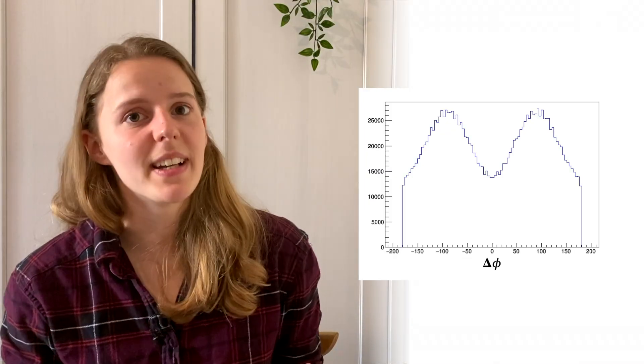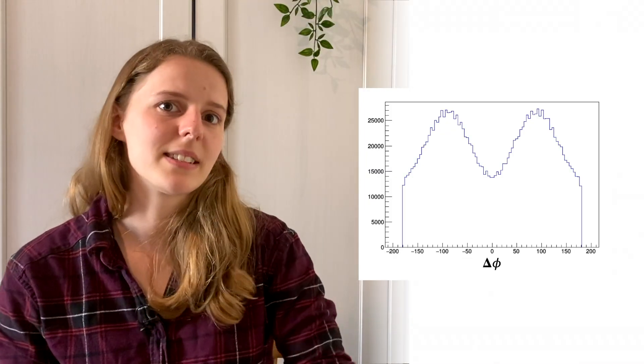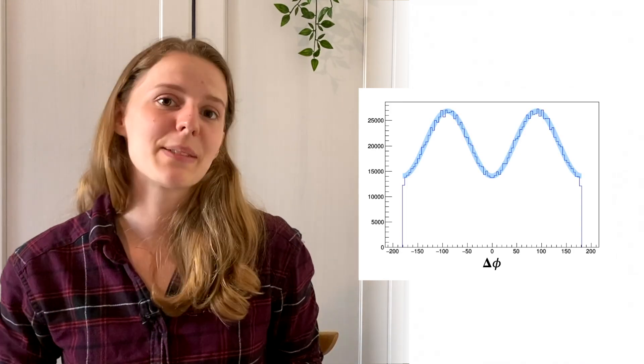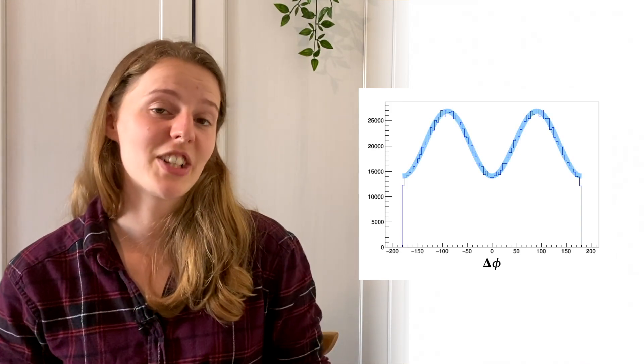So, how could this help in medical imaging? First thing to do is find delta phi, the difference between the angles for all the photon pairs we detect. And as expected, this has a nice cosine shape.